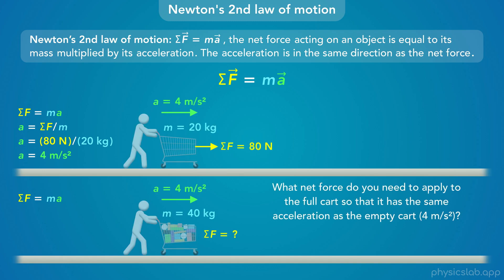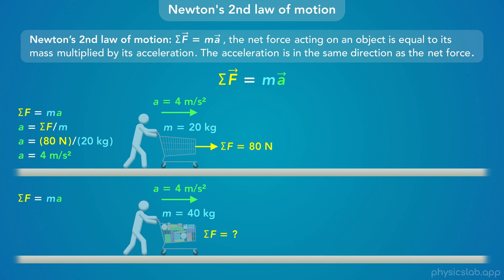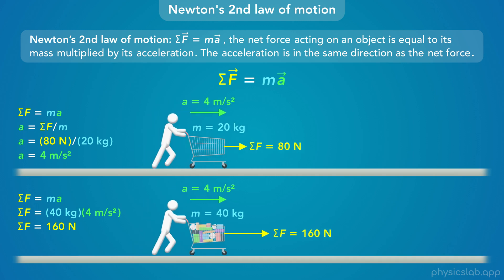What net force do you need to apply to the full cart so that it has the same acceleration as the empty cart, which is 4 meters per second squared? The full cart has twice the mass, so it needs twice the net force to get the same acceleration. Plugging in 40 kilograms and 4 m/s², we get 160 newtons. So we have to push the full cart with more force to accelerate it at the same rate as the empty cart.